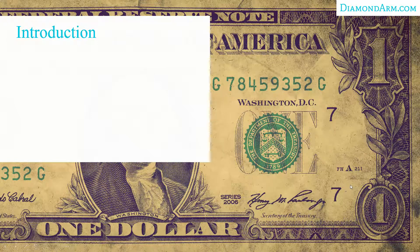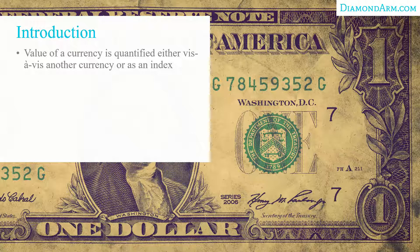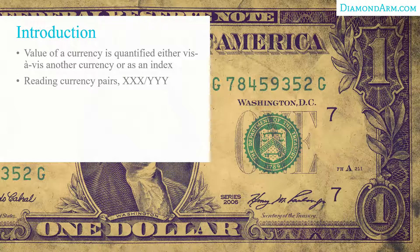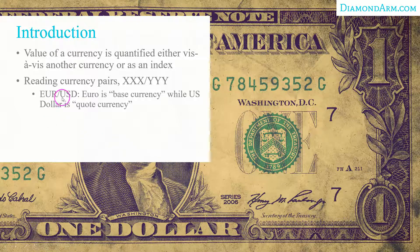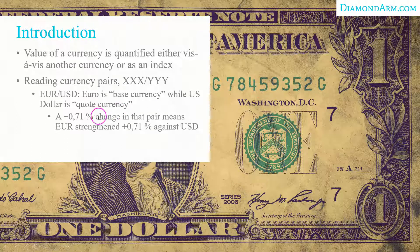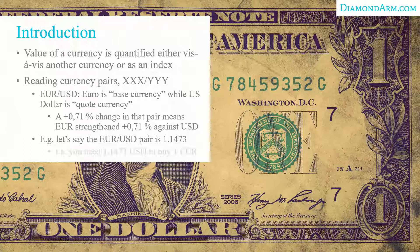Let's have a brief intro into the forex market. The value of a currency is quantified either vis-à-vis another currency or as an index — for example, the US dollar index compares the dollar against a basket of currencies. Here's how you read currency pairs: taking euro slash US dollar as an example, EUR is called the base currency while US dollar is the quote currency. A 0.71% change means the euro has strengthened 0.71% against the US dollar. If the pair is at 1.1473, that means you need 1.1473 US dollars to buy one euro.